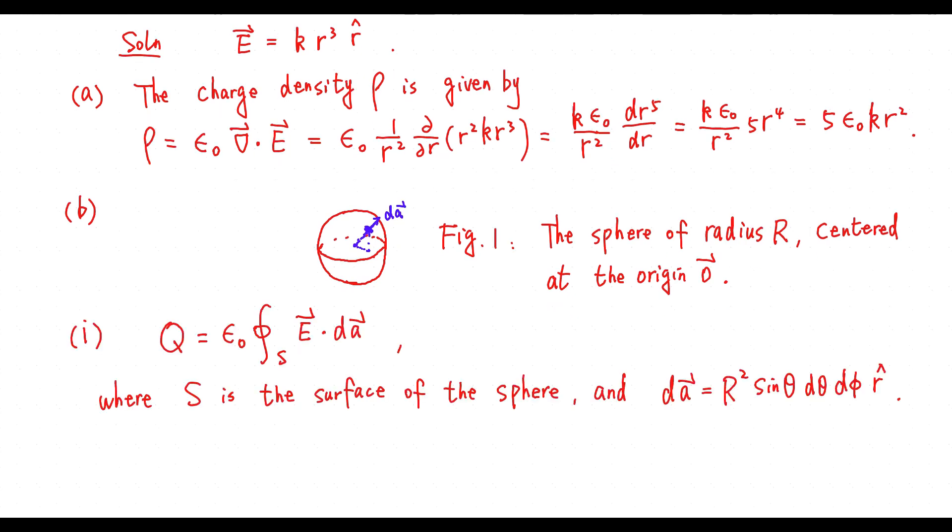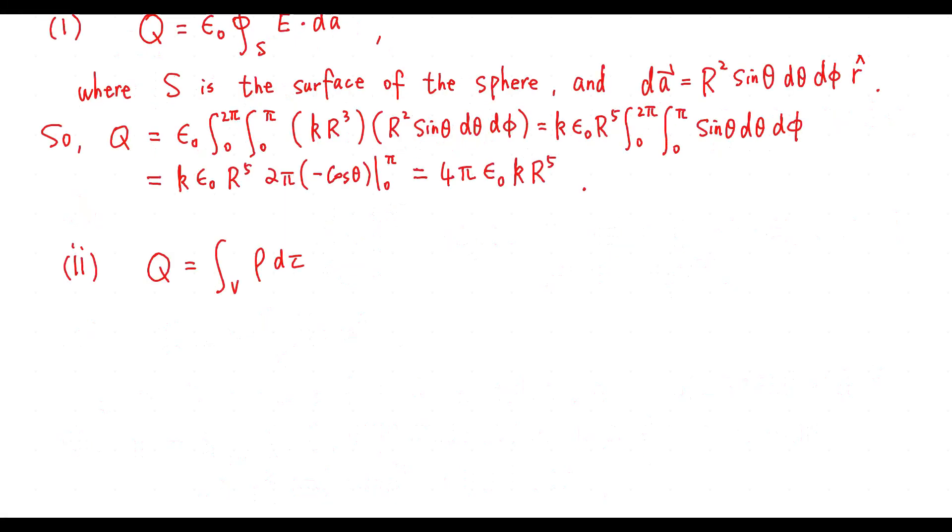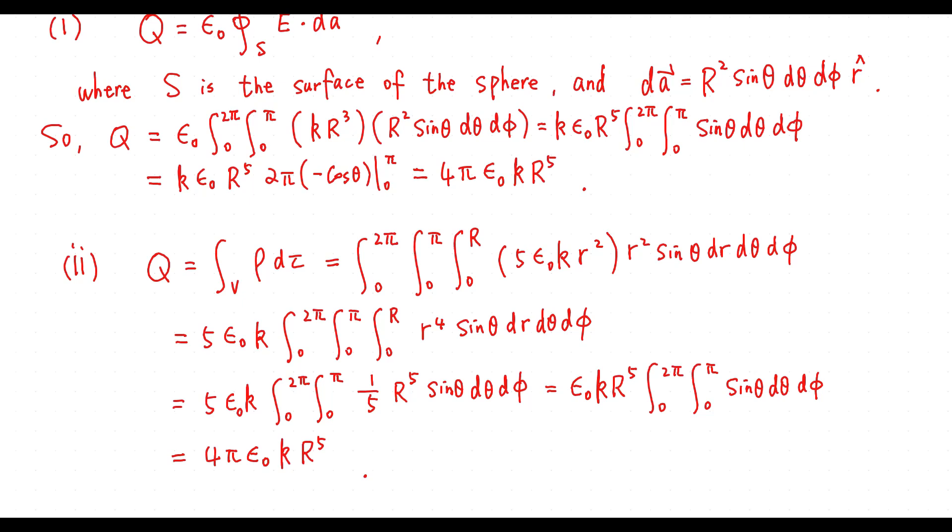Part B, Method 1: The total charge is given by this one. So the total charge Q is given by this one. By part A we get this result.